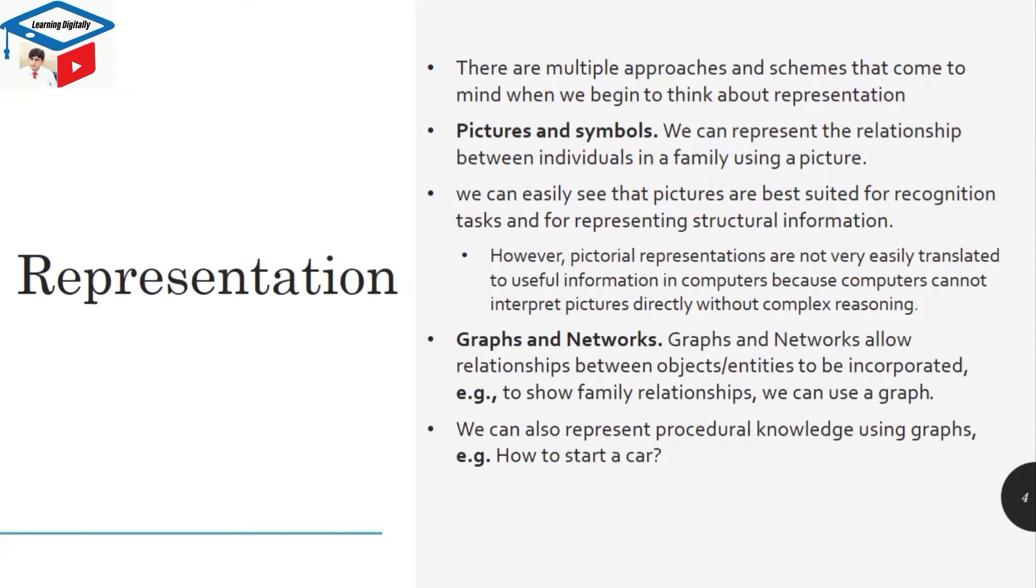Another type of representation is graphs and networks. Graphs and networks allow relationships between objects and entities to be incorporated. For example, to show family relationships we can use a graph. We can also represent procedural knowledge using graphs, for example, how to start a car. Then numbers are also a source of representation because numbers may be translated easily to computer representations.